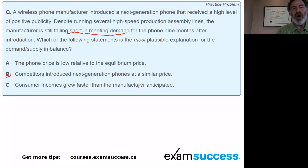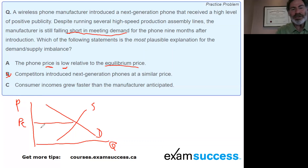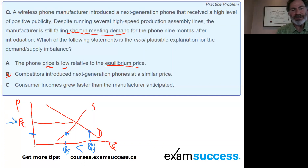When they talk about the price being low relative to the equilibrium price, we're talking about a situation that looks like this graph right here. We've got quantity and price — here's the demand curve, here's the supply curve, here's the equilibrium price, and now we're down at a much lower level. At this price, the quantity demanded is much higher than the quantity supplied — we've got a shortage. This is CFA Institute's way of saying the price is low relative to the equilibrium price: we must be in a shortage. That's how you crack the code.